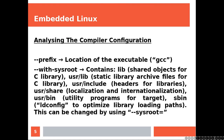We have the prefix, which defines the location of the executable, which in this case is GCC. And then we have the with-sysroot. The sysroot is a directory that contains very important subdirectories: lib, which contains shared objects for the C library; usr/lib, which contains static library archive files for the C library; usr/include, which contains header files for the libraries; usr/share, which contains localization files; and usr/bin, which contains utility programs for the target.